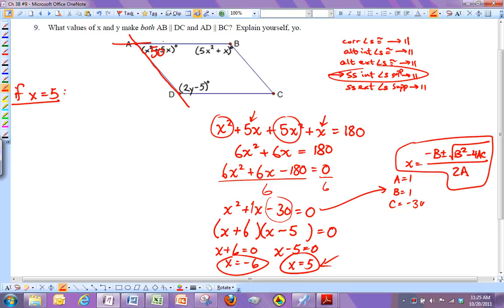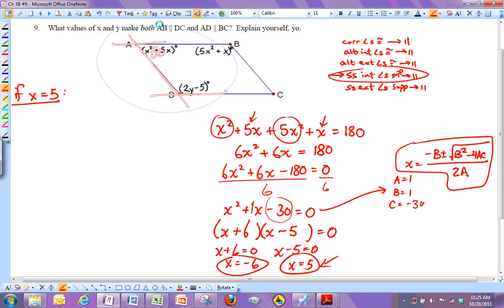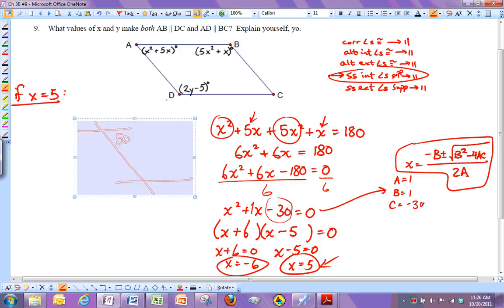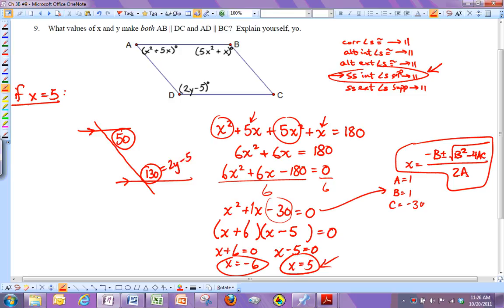Well, if I look at these two angles here that are formed, the 50 and the 2y minus 5, I want the top and bottom to be parallel. So if I want these to be parallel, then I need this angle and this angle to add up to 180 because they're also same side interior angles. So this needs to be 130, but it's also the 2y minus 5. So if x is 5, I'm going to get 130.